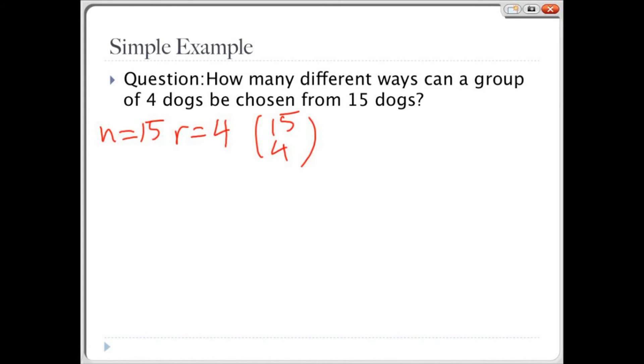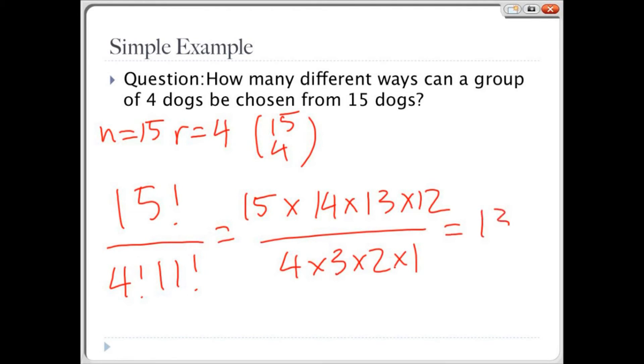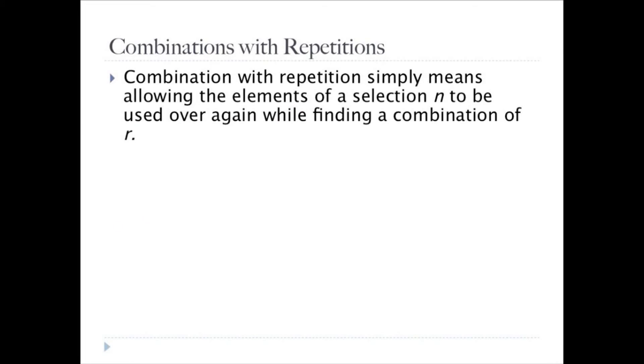Using the formula, we have 15 factorial over 4 factorial times 11 factorial, which is equal to 15 times 14 times 13 times 12 over 4 times 3 times 2 times 1, and this turns out to be 1,365. So, we see that there are 1,365 different groups of 4 dogs that could be formed.